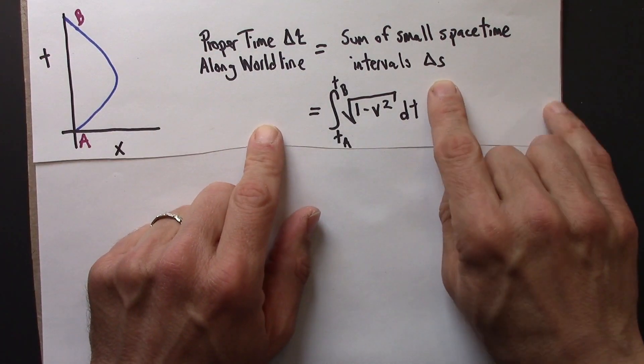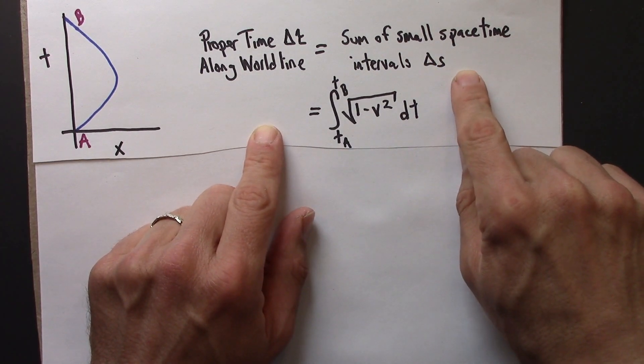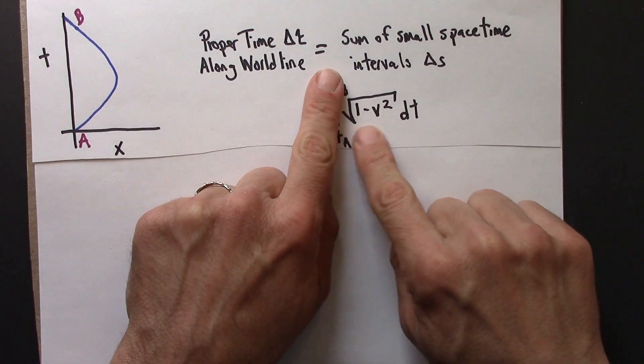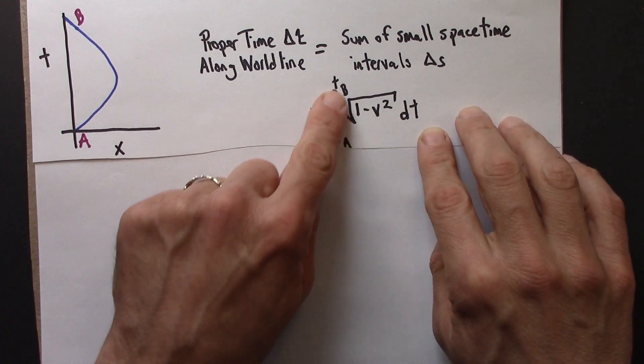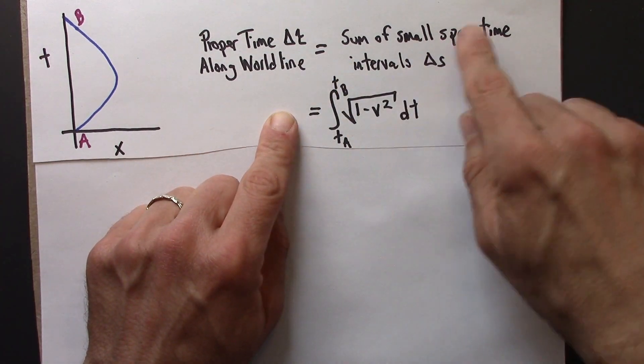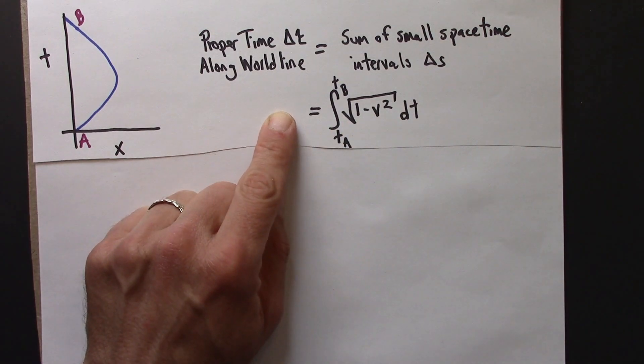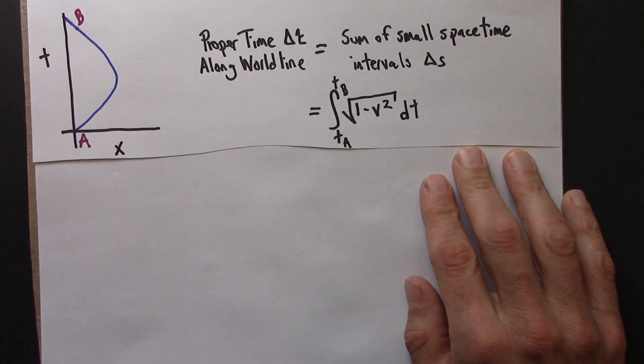We can evaluate delta S using the metric equation, and if we start with a metric equation and do a little bit of algebra on it, it turns into this. And then this is a definite integral in calculus that means add up all of these little space-time intervals to get the total proper time.